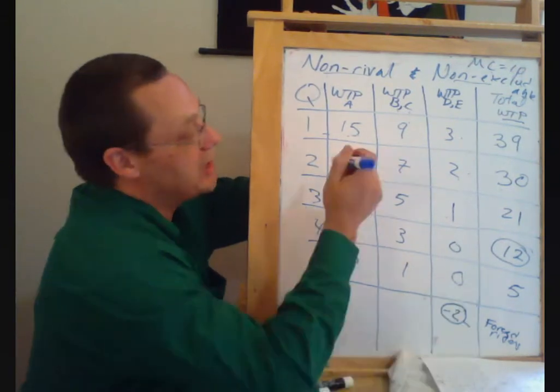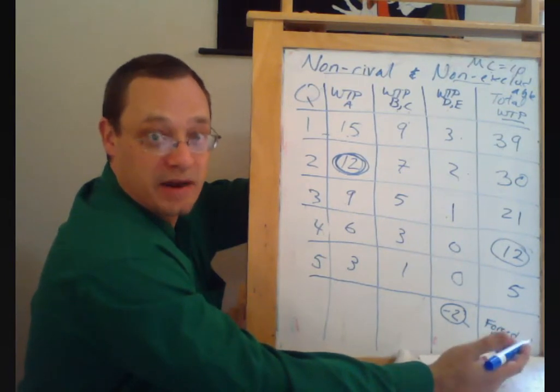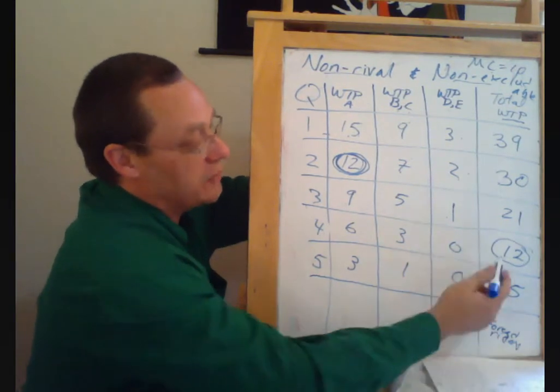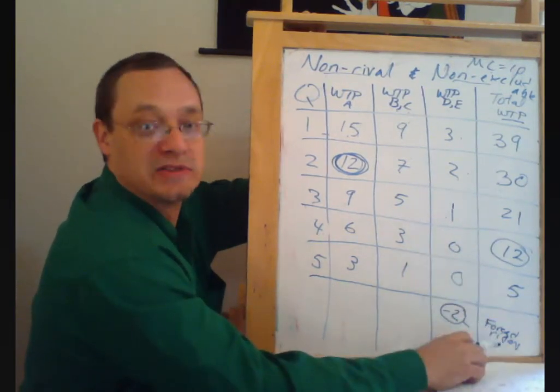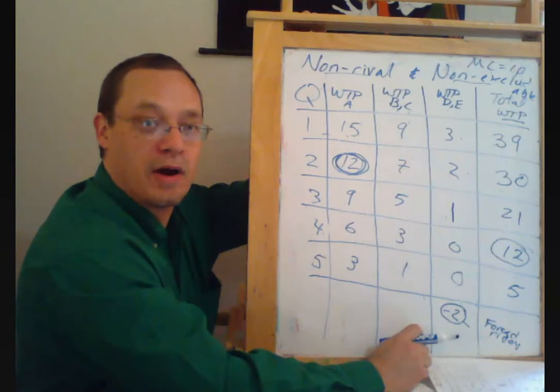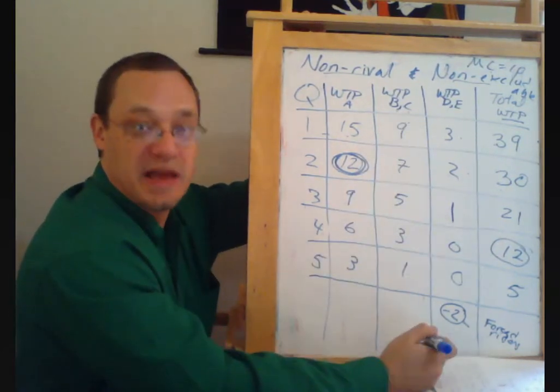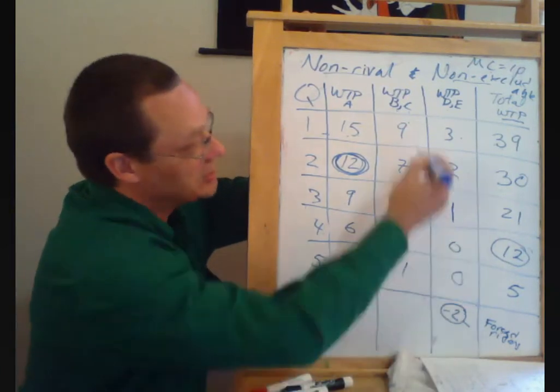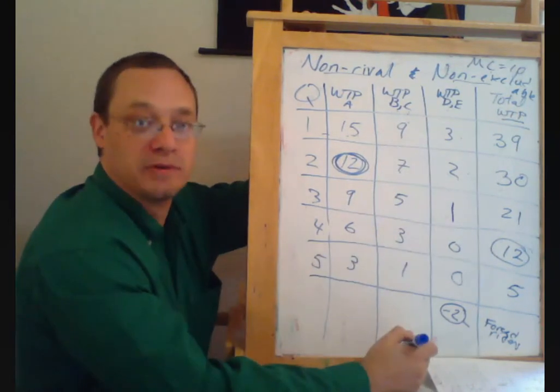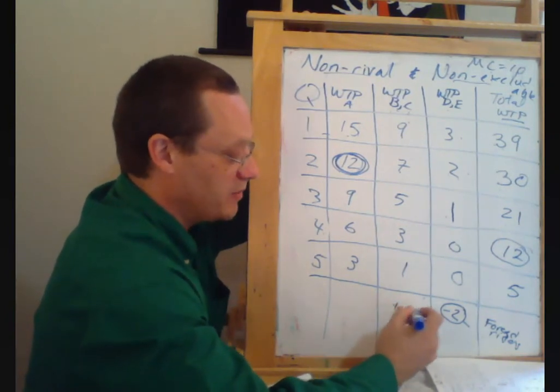So if we have private provision, we're going to have an under-efficient quantity and free riding. If we have public provision, we may have the efficient quantity, but we may end up having some forced riders here. And notice, it's the people who value the good relatively little who are going to be the forced riders here. These other groups of people are going to be net beneficiaries of this, so $16, $21, $24. Each of these people gets $24 worth of benefit, pays $8 worth of tax, so they get net benefit of plus $16.